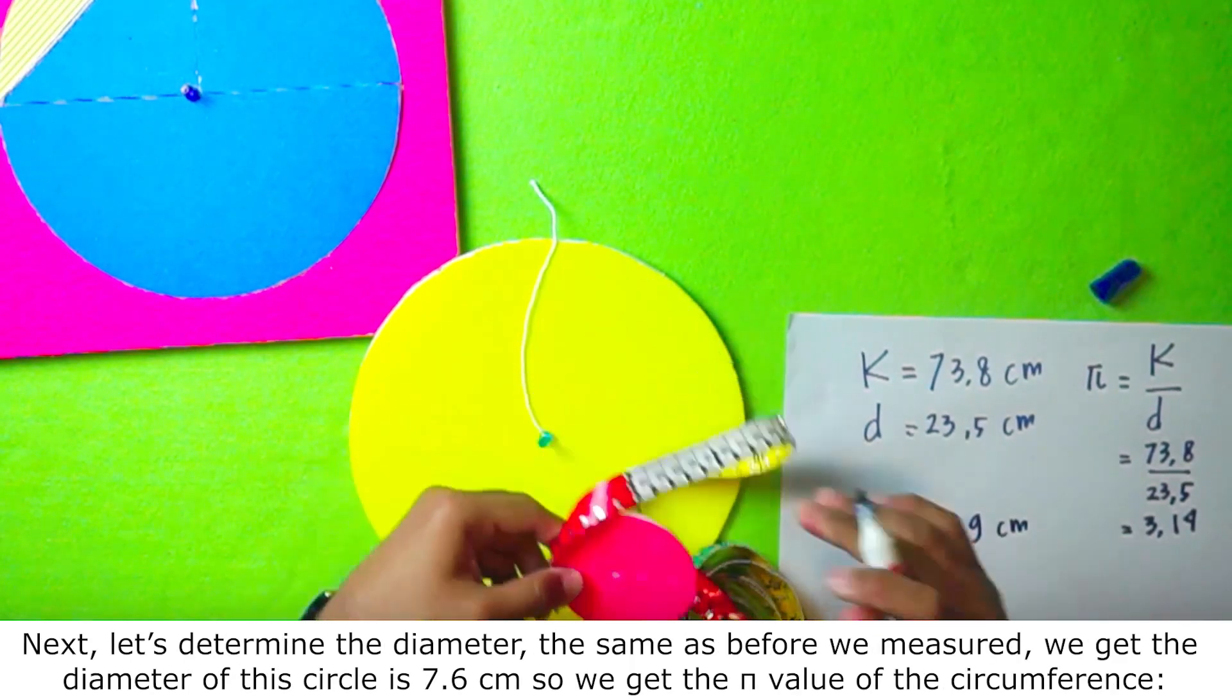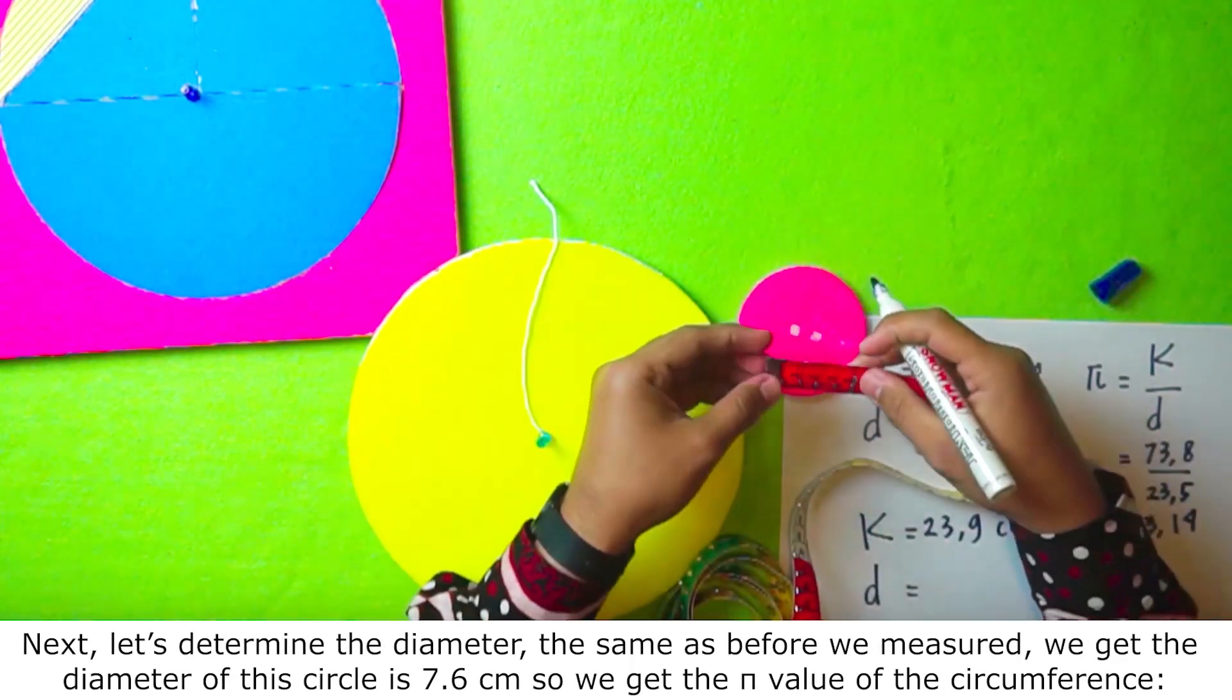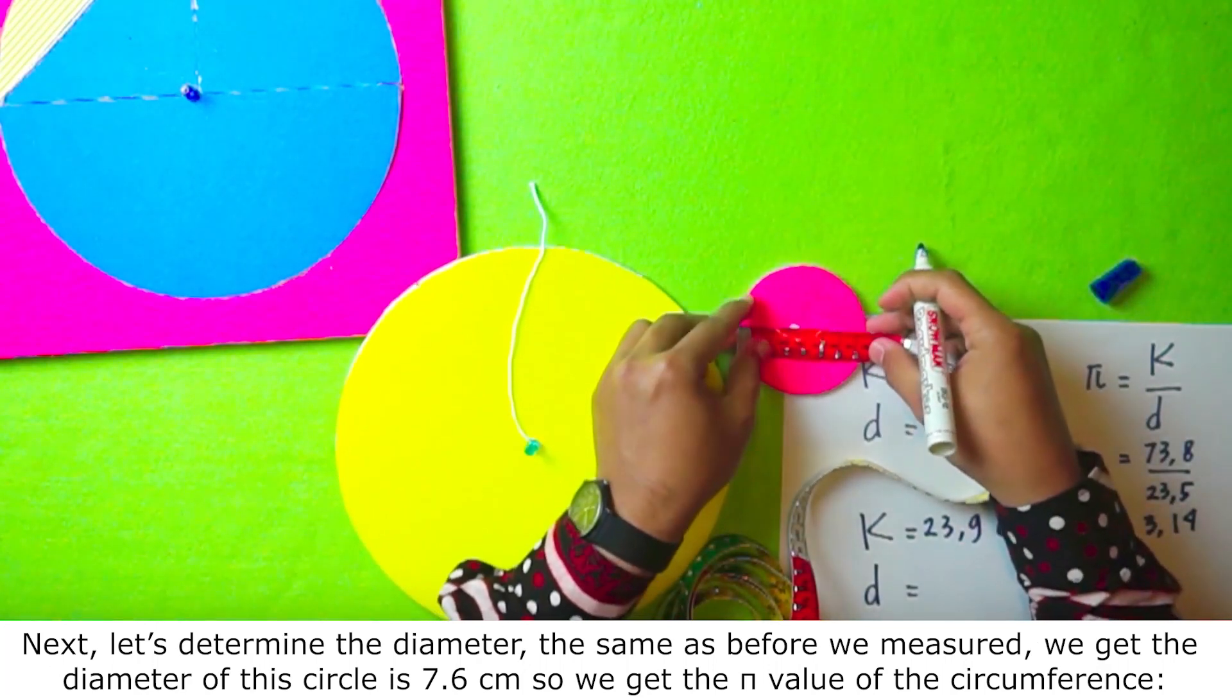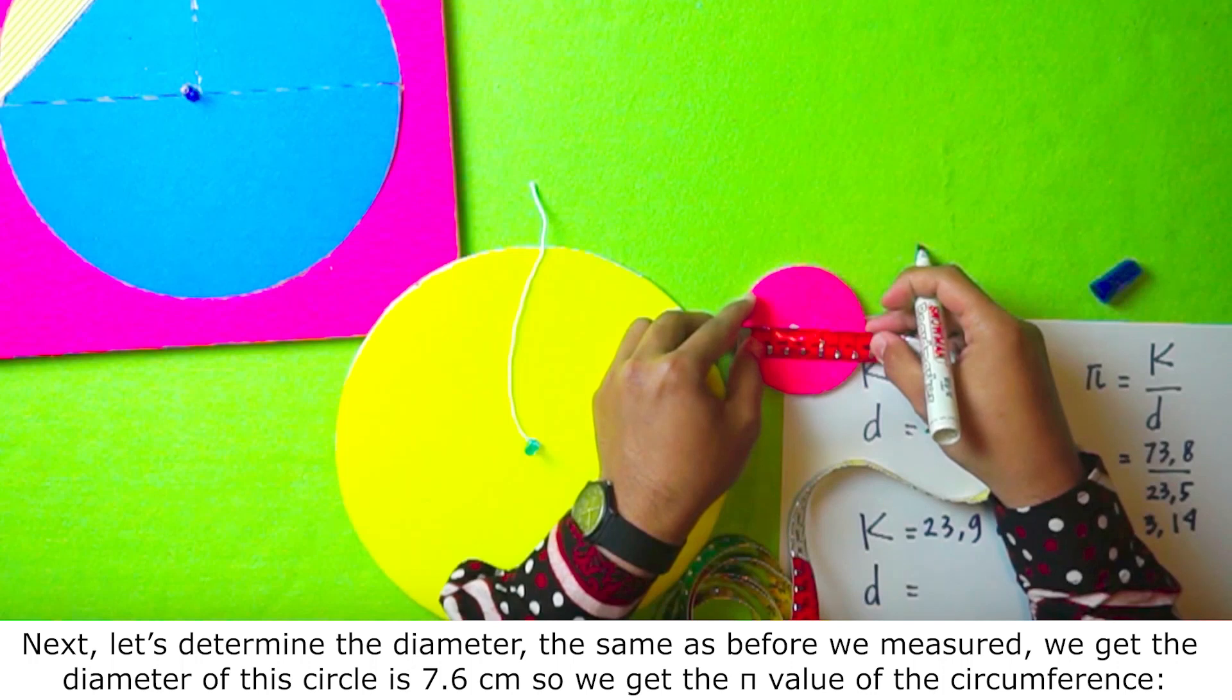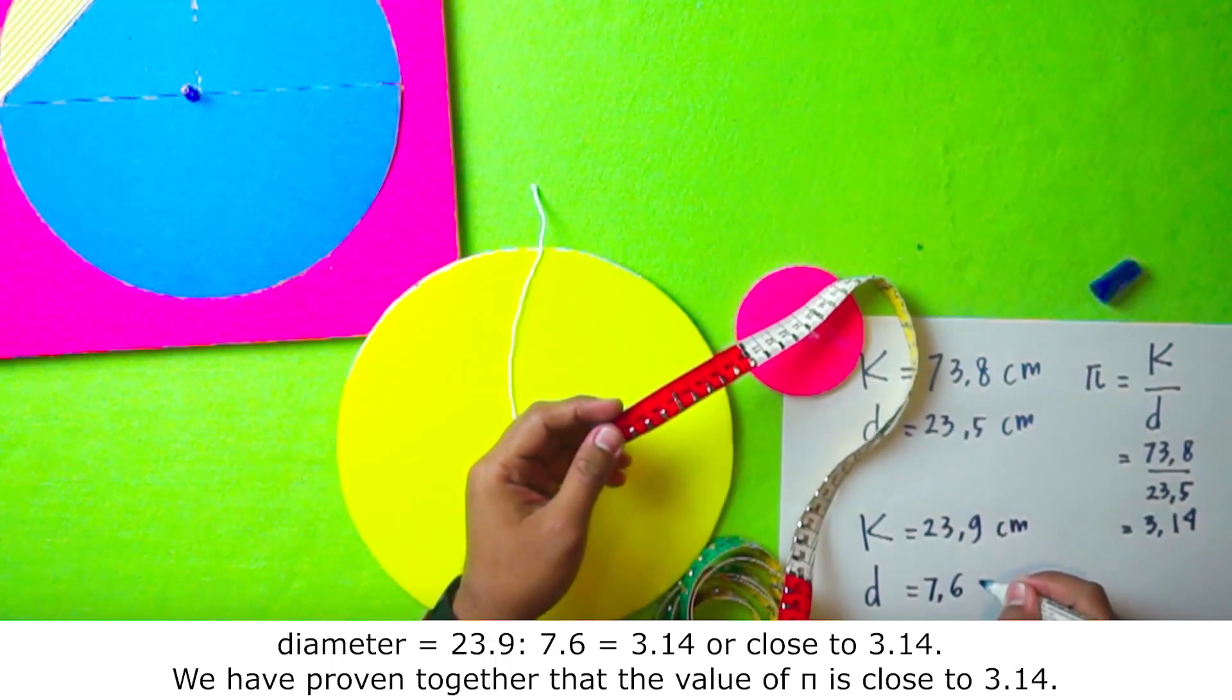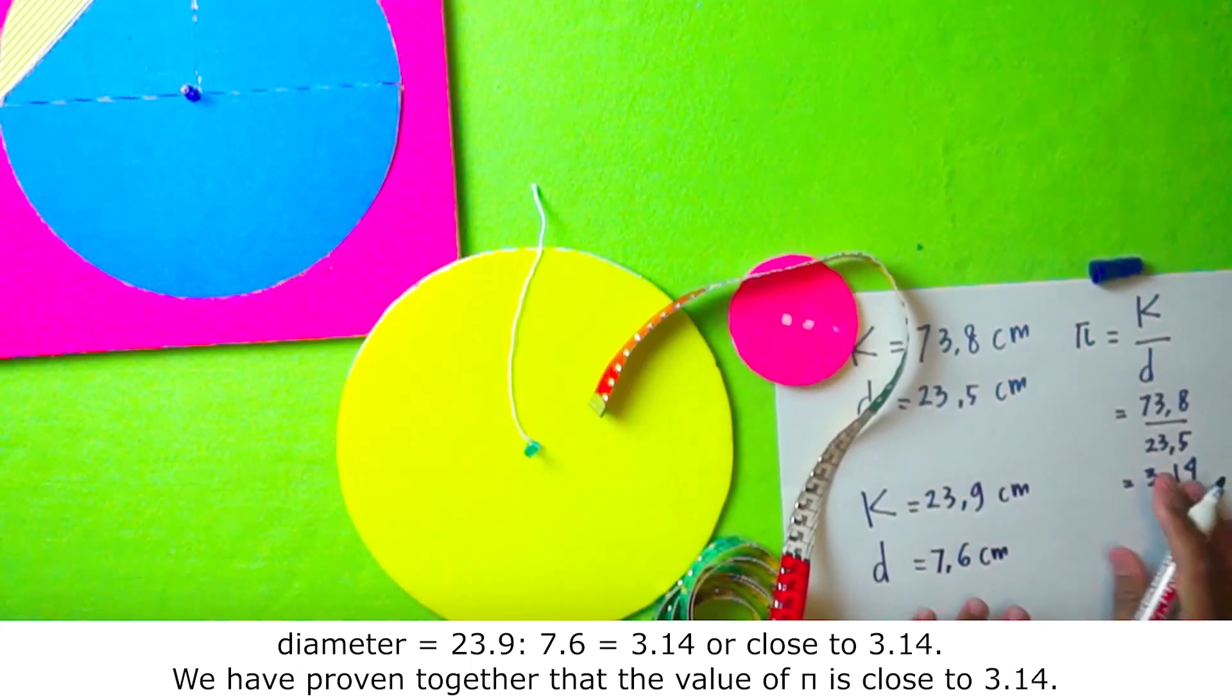Next, let's determine the diameter. The diameter is 23.9 divided by 7.6 equals 3.14 or close to 3.14.